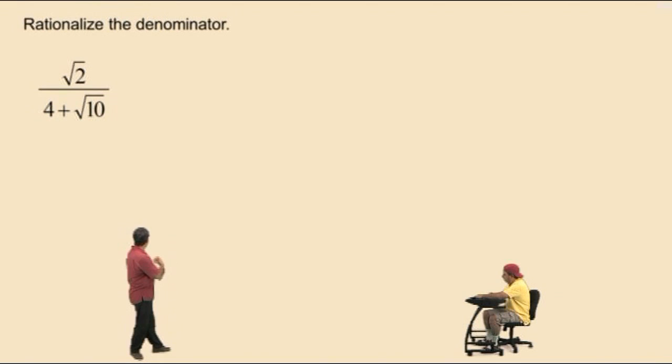Now Charlie, what is the conjugate of 4 plus the square root of 10? 4 subtract square root of 10. Very nice. So we'll multiply both the numerator and denominator by that conjugate.